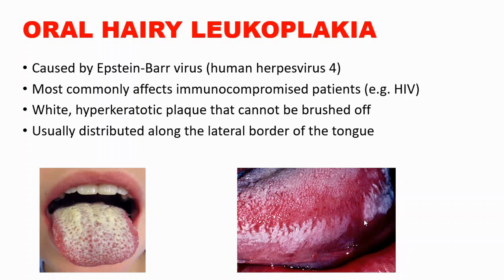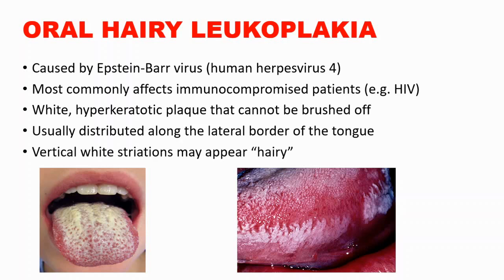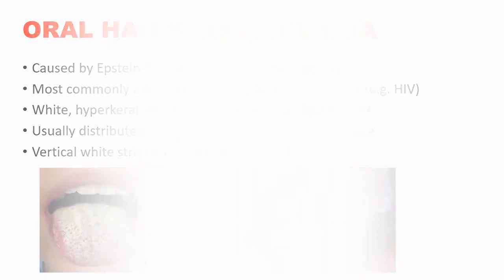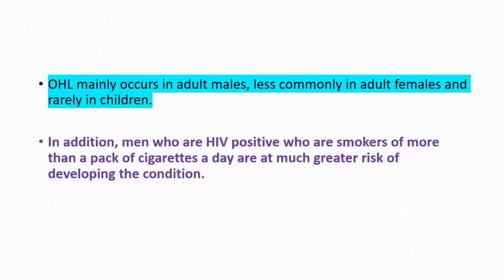The vertical striations may appear hairy, which is another distinguishing feature. Oral hairy leukoplakia is mainly occurring in adult males, less commonly in adult females, and rarely in children.